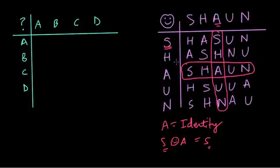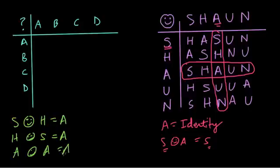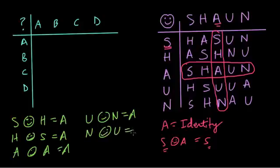In the second table, we want to map to the identity, which is A. S smiley face H leads to A, so H is the inverse of S. And H smiley face S leads to A, so S is the inverse of H. A smiley face A leads to A — they're inverses of each other. U smiley face N equals A, so N is the inverse of U. And N smiley face U gives you A. Whenever you have an operation that leads to the identity element, you have two inverse elements.